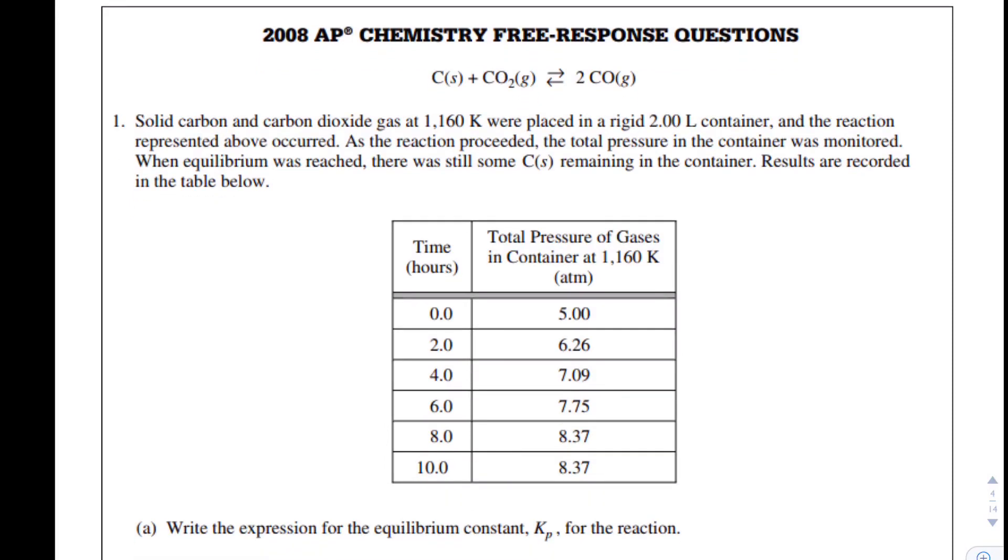In this video, we're going to take a look at the first FRQ question from the 2008 AP Chemistry test. And here we've got a synthesis reaction. It says solid carbon and carbon dioxide gas at 1160 Kelvin were placed in a rigid 2-liter container, and the reaction represented above occurred. As the reaction proceeded, the total pressure in the container was monitored.